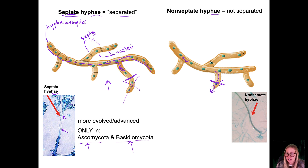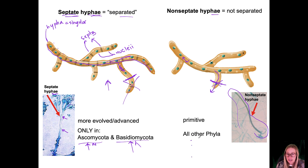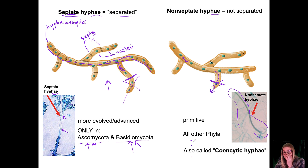Here's what non-septate hyphae looks like under the microscope. This is characteristic of more primitive species — all phyla besides Ascomycota and Basidiomycota: the chytrids, Glomeromycota, and Zygomycota. Non-septate hyphae can also sometimes be referred to as coenocytic hyphae, so if you see that in your book or lecture text, that just means non-septate.